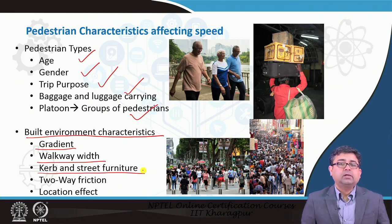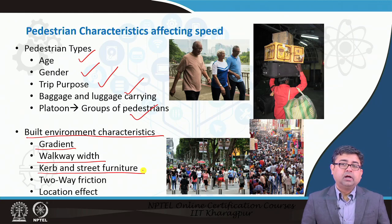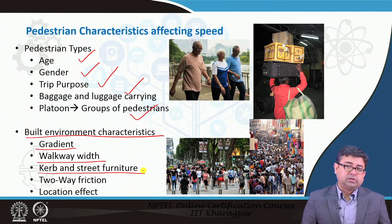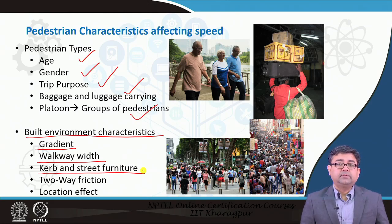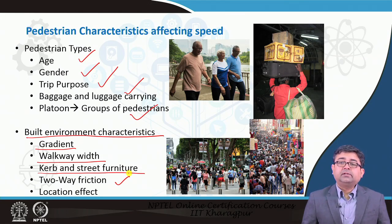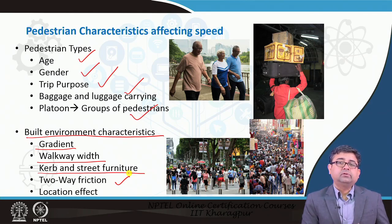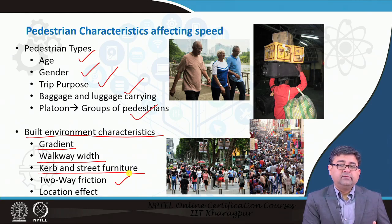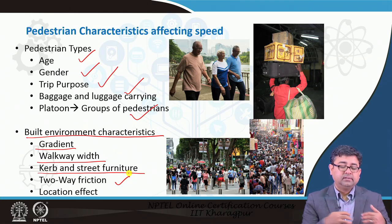Whether winding paths are an inconvenience depends on purpose: if you are leisurely walking you may enjoy winding paths, but for urgent purposes you prefer to walk fast. Other factors include benches, and of course footpath encroachment — sometimes two-wheelers or even four-wheelers are parked on sidewalks — all of which cause great inconvenience and reduce pedestrian speed. Two-way friction is also important: if there is only a sidewalk on one side of the road, all people tend to walk on that side, creating two-way pedestrian traffic and friction that reduces speed.